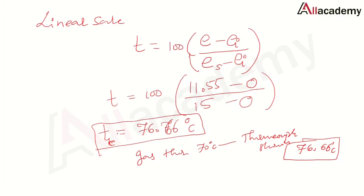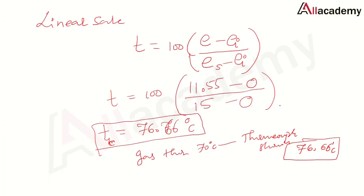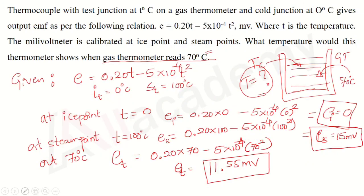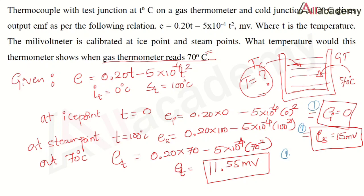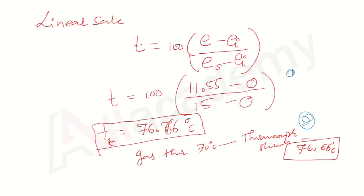For mark distribution: if asked for 6 marks, 1 mark each for the EMF calculations at ice point, steam point, and known temperature, then 1 mark for substitution and simplification, and 2 marks for the final answer. Generally this question is asked for 4 to 5 marks maximum.